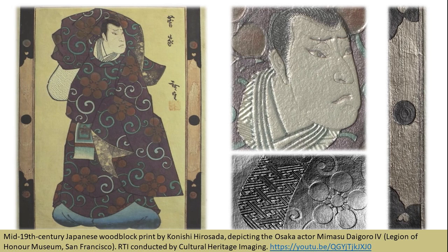Look, for example, at the actor's face and the contour lines for his mouth, eyes and eyebrows, as well as the fine lines for his hair and the details of his kimono. Look at his sleeve on the left. Without a doubt, the person who carved the woodblock was very talented and had an eye for details. Think how much of this detail would be lost if you had only seen the artifact in a museum display case under normal lighting conditions.